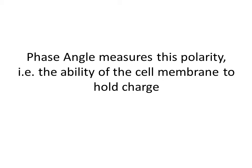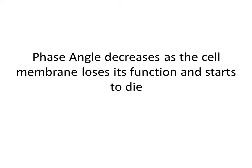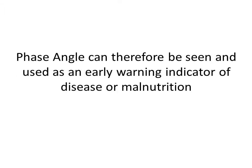Phase angle measures this polarity — i.e. the ability of the cell membrane to hold on to charge. Phase angle decreases as the cell membrane loses its function and starts to die. Phase angle can therefore be seen and used as an early warning indicator of disease or malnutrition.